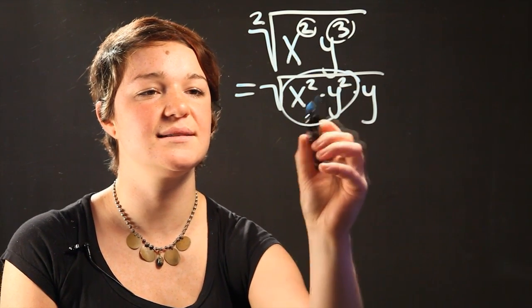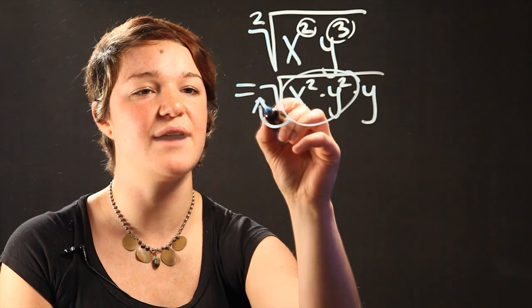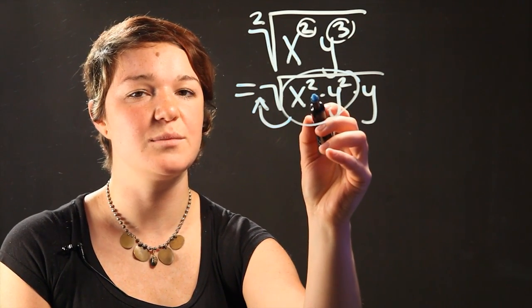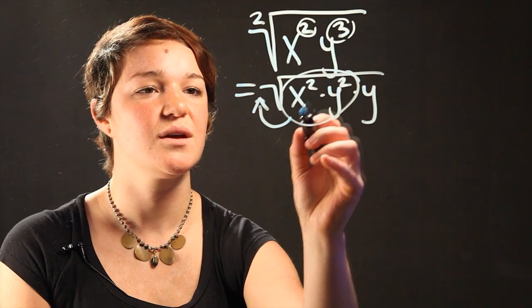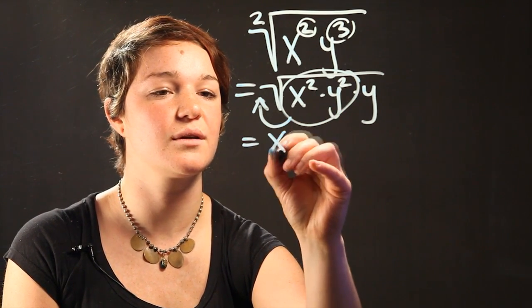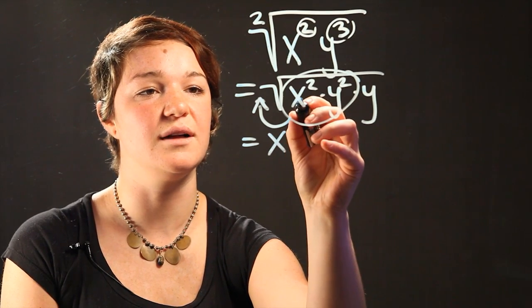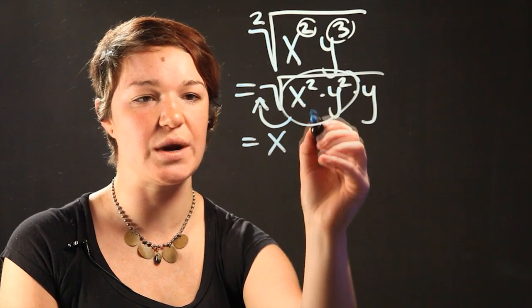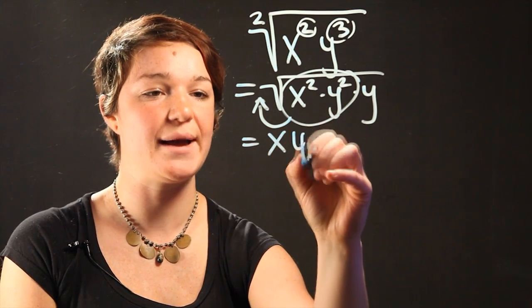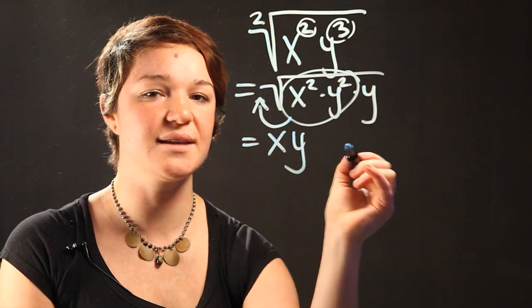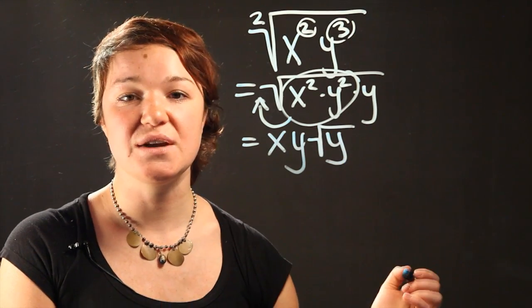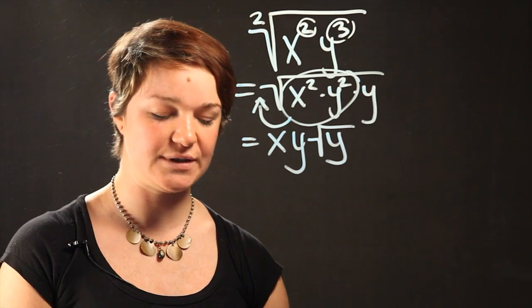Here we're going to take this and pull it outside of the radical. Because this is a square root of two numbers that are squared, those numbers are going to turn into just the number. So the radical of x squared is just x, and the radical of y squared is just y. So the only thing that's left under the radical is radical y. So that's the answer to our first question.